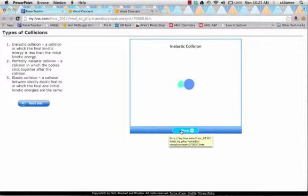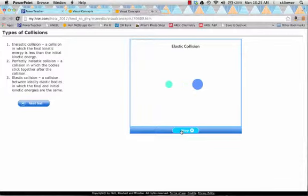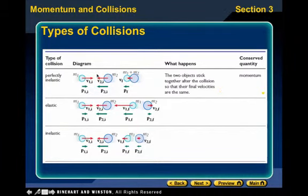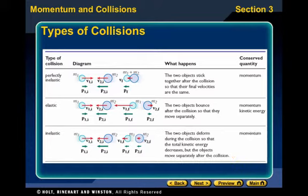During an inelastic collision, the objects deform and move separately after the collision — the total kinetic energy decreases. During a perfectly inelastic collision, the two objects stick together and their final velocity is the same — the total kinetic energy decreases. During an elastic collision, the objects bounce apart and move separately — there is no change in the total kinetic energy. The diagram shows: perfectly inelastic — objects move toward each other and then go off together; elastic — the two objects bounce and move separately, with both momentum and kinetic energy conserved; inelastic — objects deform and could both be moving in the same direction but are not sticking together.